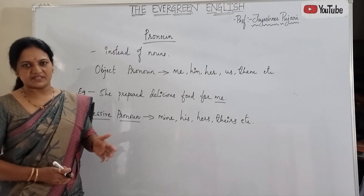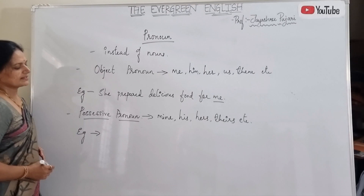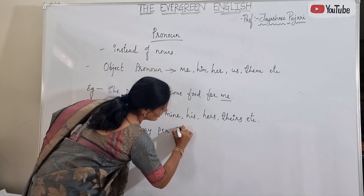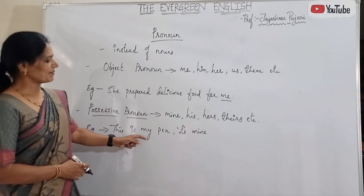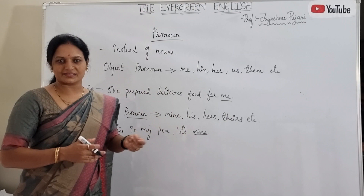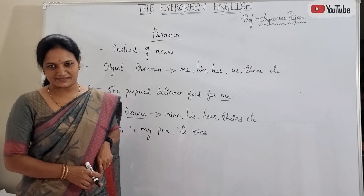Examples of possessive pronouns: 'This is my pen' — it's mine. When I stress it: 'This is my pen. It's mine.' That is possessiveness. 'It is her doll. It's hers.' 'It is their house. It is theirs.' 'The pen belongs to him. It is his pen.' These are possessive pronouns.